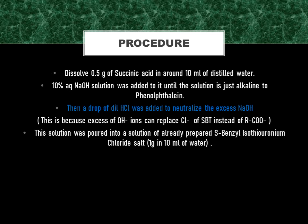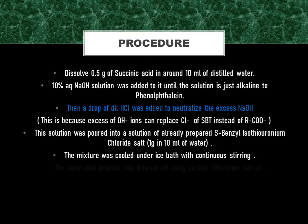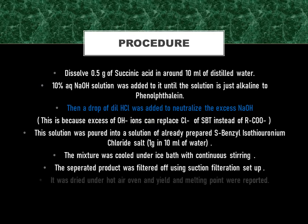Then, this solution was poured into a solution of already prepared S-benzyl isothiouronium chloride salt — 1 gram in 10 ml of water. The mixture was cooled under an ice bath with continuous stirring. The separated product was filtered off using a suction filtration setup. It was dried under a hot air oven. And finally, yield and melting point were reported.